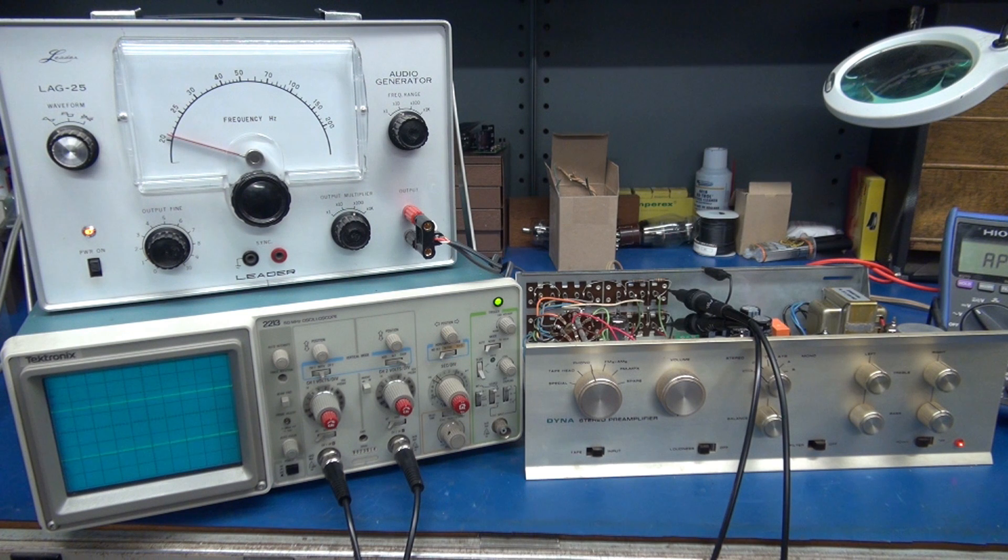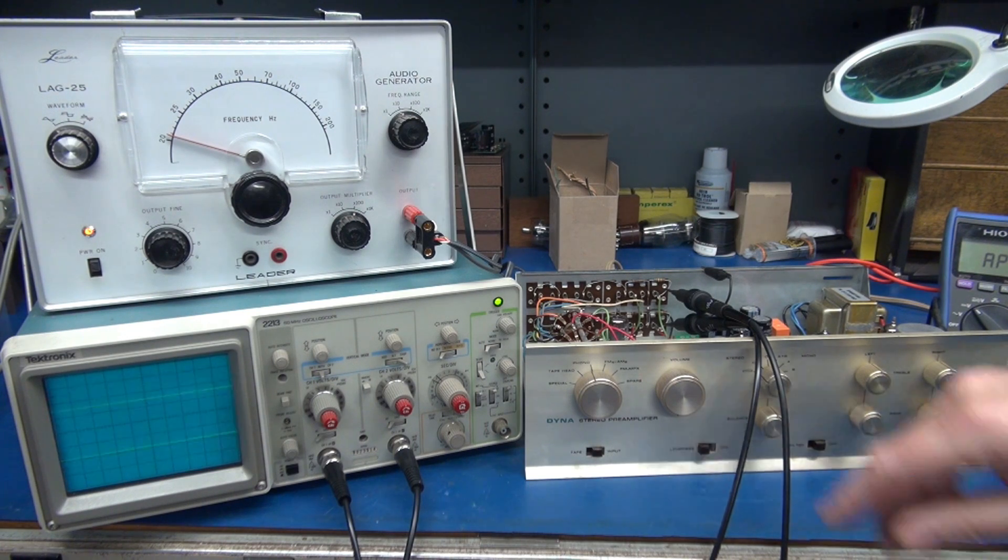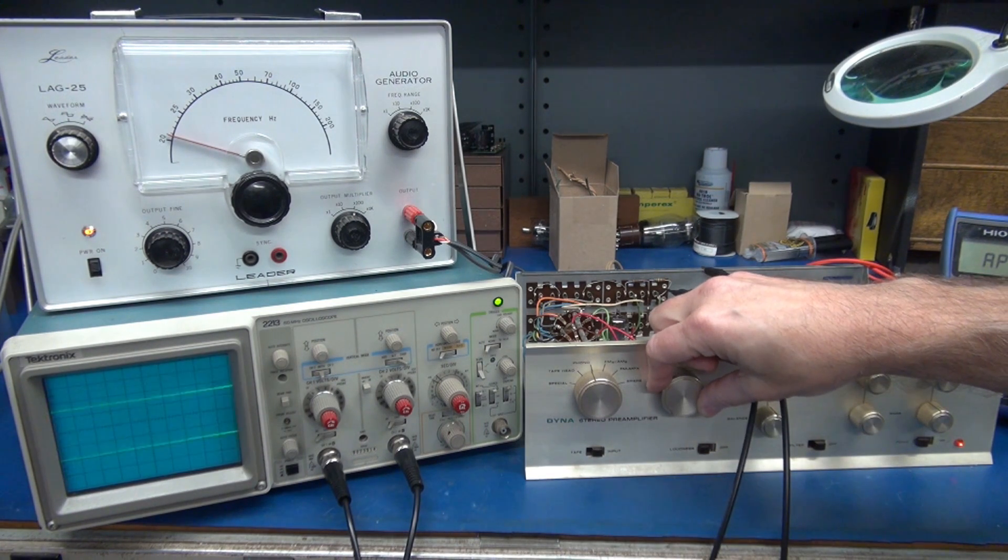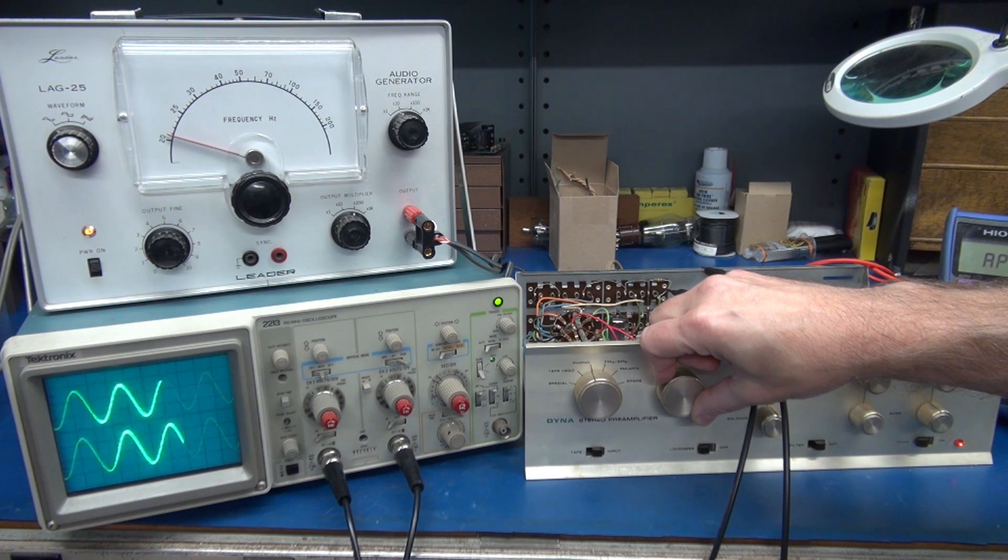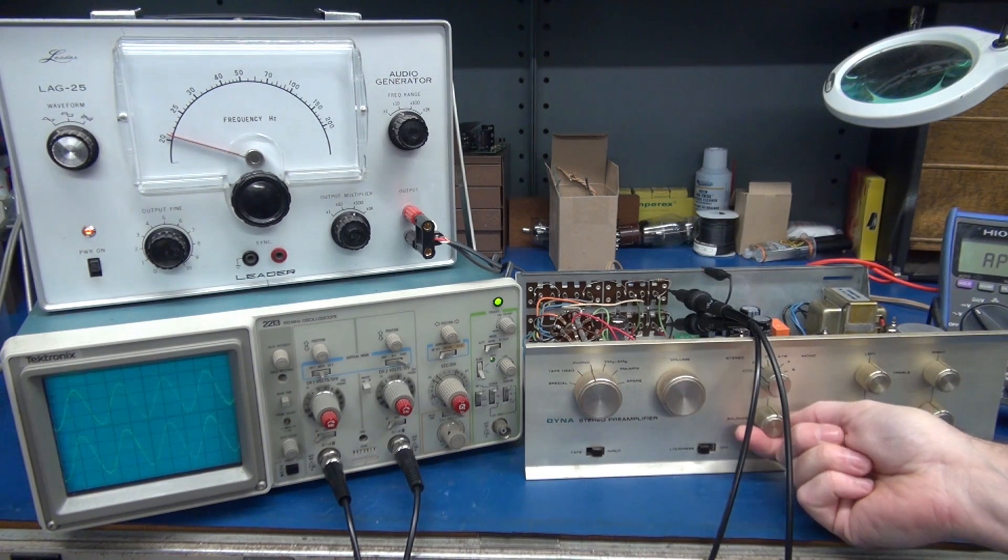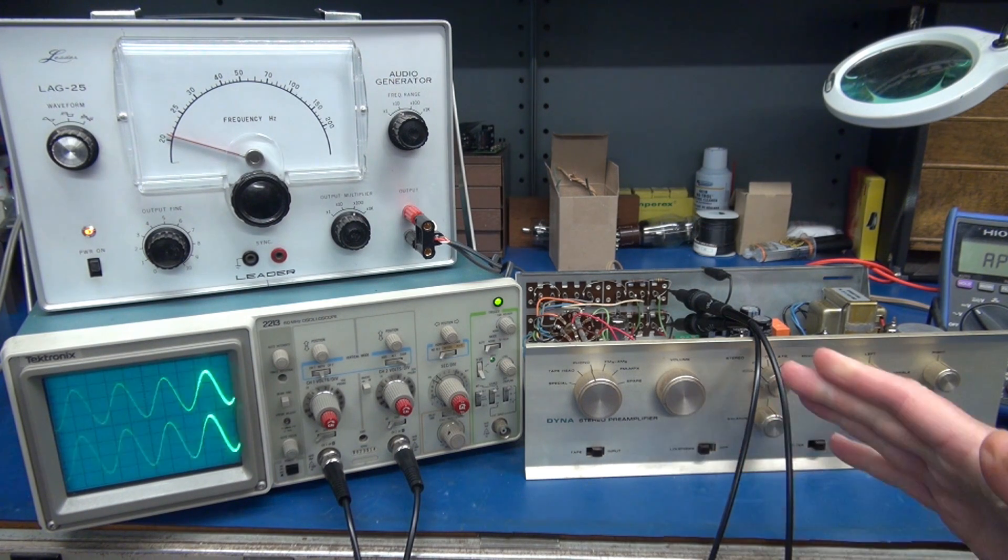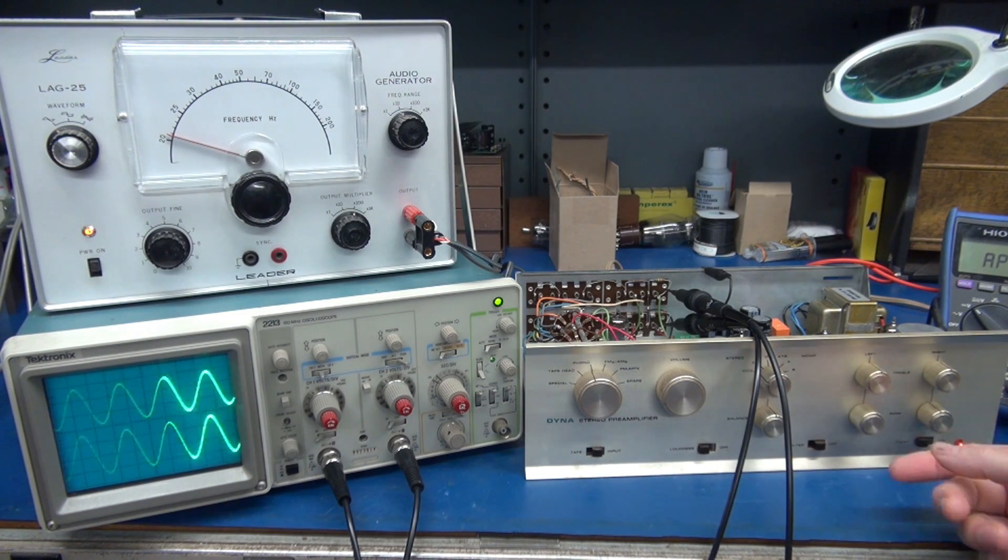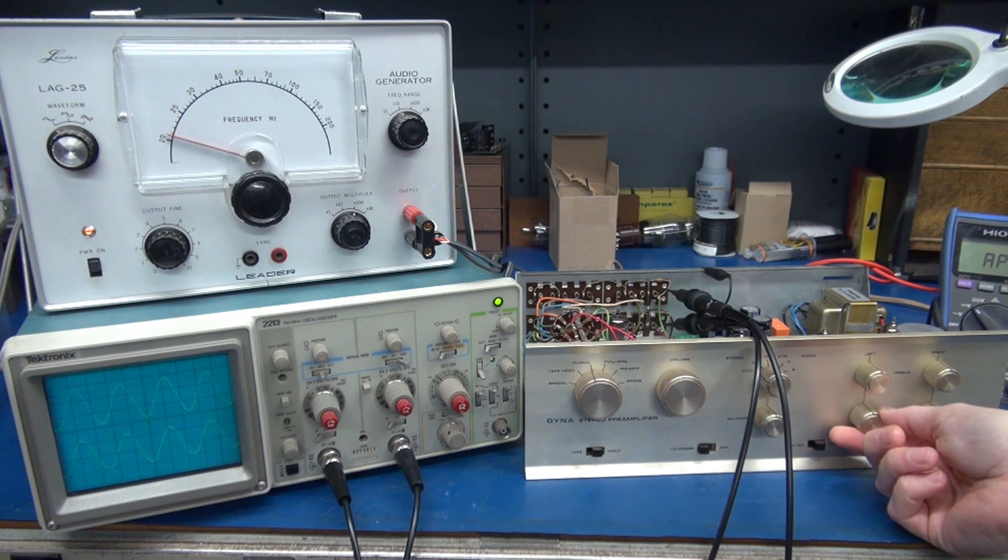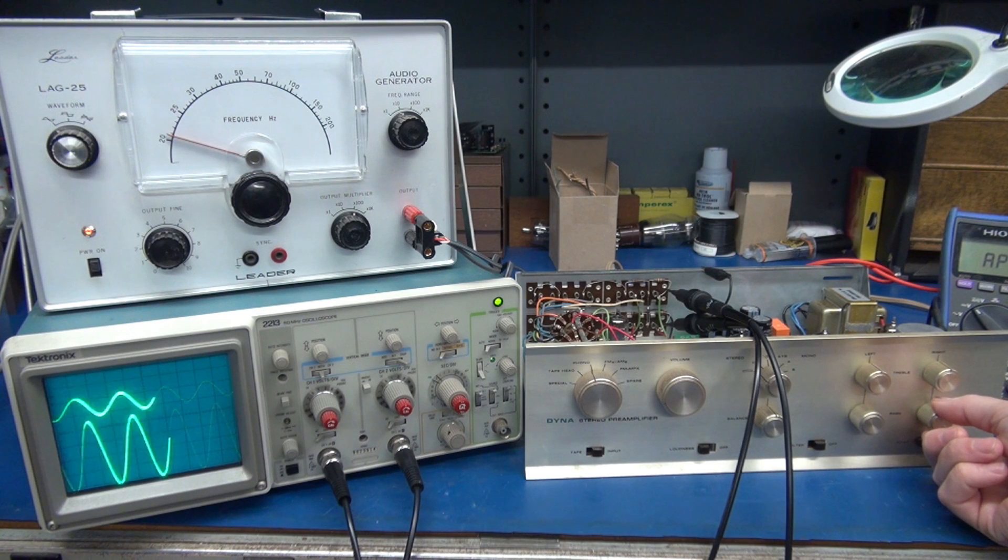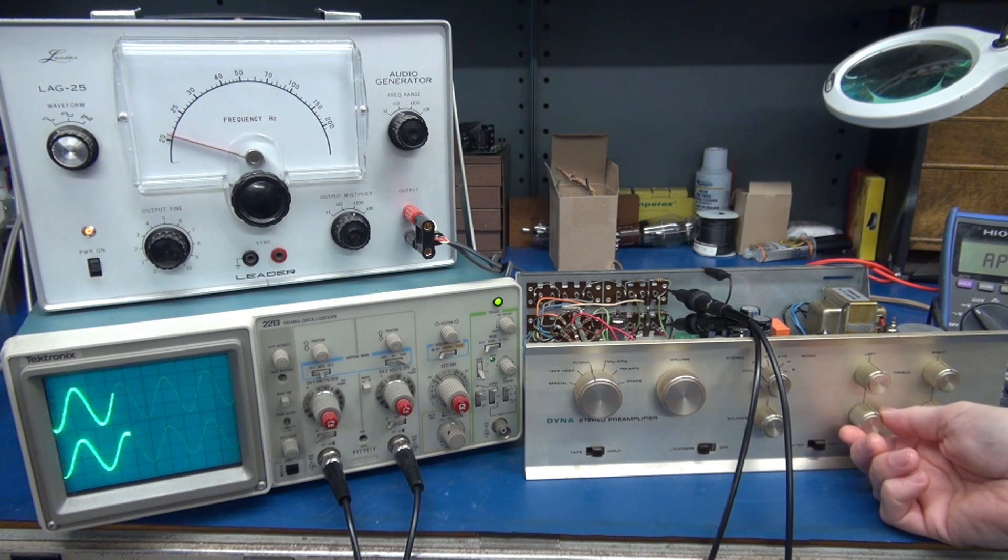Now here is the phono input procedure. Connect the preamp under test per the diagram. The audio generator is set for sine wave output, 200 hertz at 10 millivolts. Now I'm going to adjust the volume. We're going to observe the left and right outputs on the scope. Now we'll check the balance control that is operating properly. Set it back at equal outputs and then adjust each of the base controls.